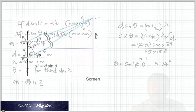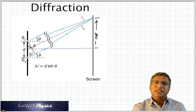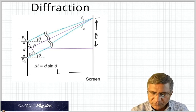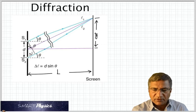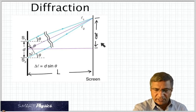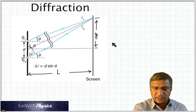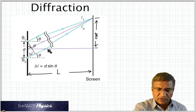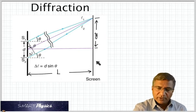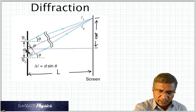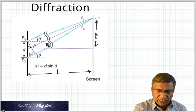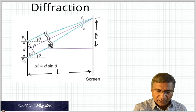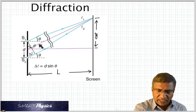So there is also another formula that comes in, which relates the distance of the band on the screen, which is Y in this case, with the distance of the screen from the slits, which is L. So if you look at this diagram carefully, you can see the right angle triangle. And if you take this is going to be theta.